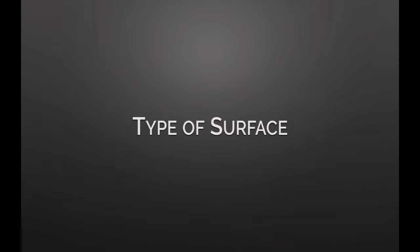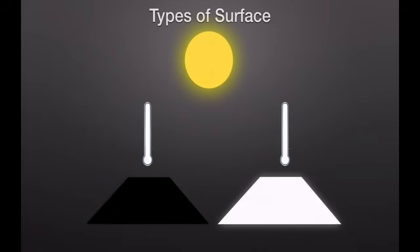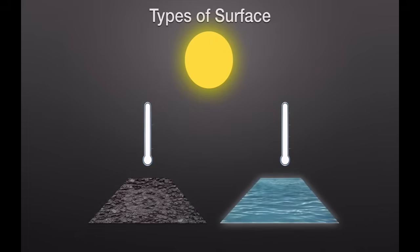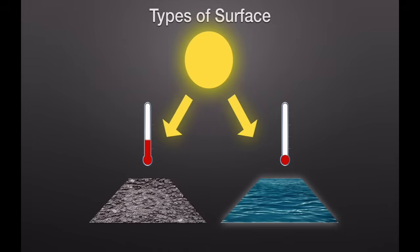The first factor is the type of surface. The type of surface really determines how much heat you absorb. Darker, rougher surfaces are going to absorb and hold on to more heat than lighter surfaces. And if we compare land versus water, land is going to absorb more heat — it takes on heat faster and gets hotter faster.